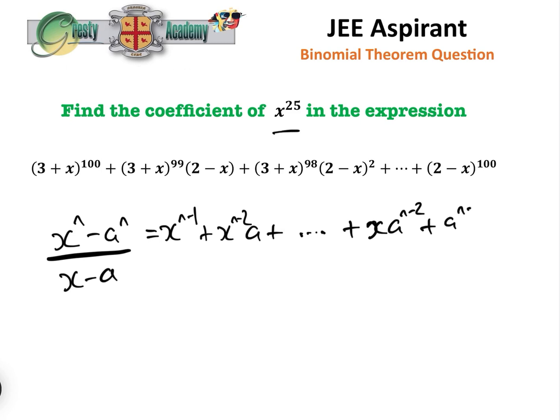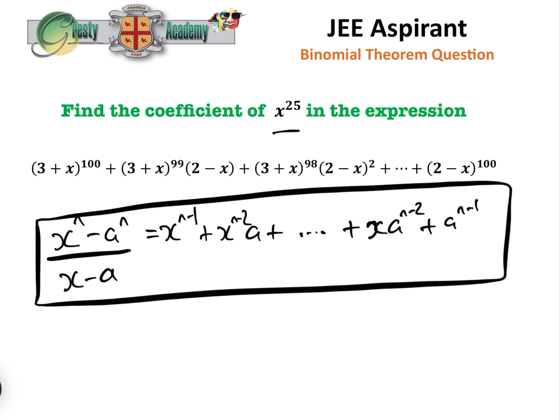So this expression is well worth remembering. It basically is just a geometric series where that is the first term and the common ratio is a over x. If you plug those into the known geometric series formula, you get that.